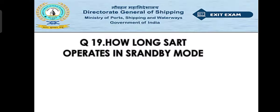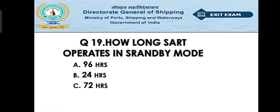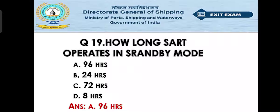Question number nineteen: how long does a SART operate in standby mode? Option A: 96 hours. Option B: 24 hours. Option C: 72 hours. Option D: eight hours. The right answer is 96 hours. When the SART is switched on, it goes into standby mode and is only activated when an X-band radar interrogates in its vicinity. The battery sustains 96 hours in standby mode.